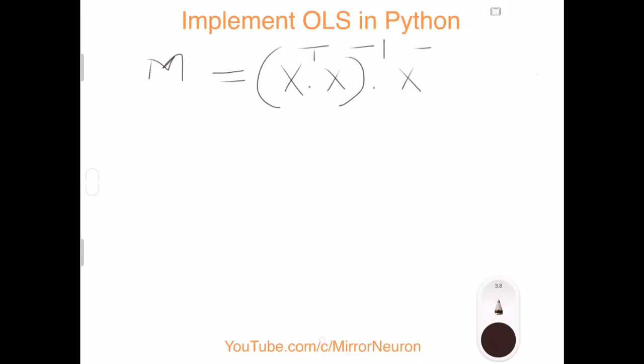And then dot product with y — this gives us the best parameters of the model so we can make predictions on new data. Now let's see how to implement this in Python first, then how to use the scikit-learn library to simplify the process.